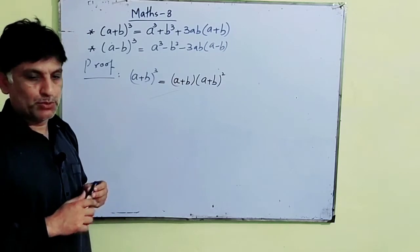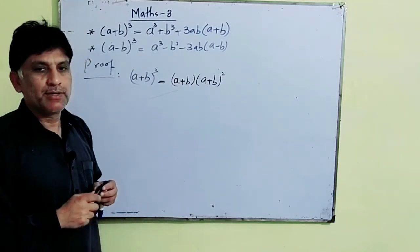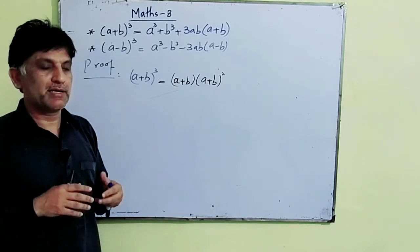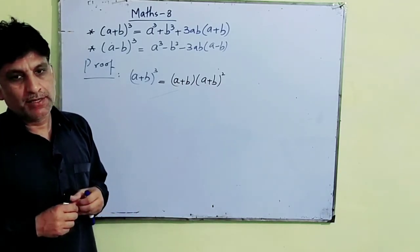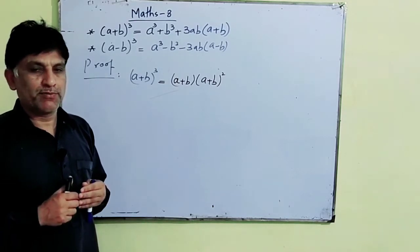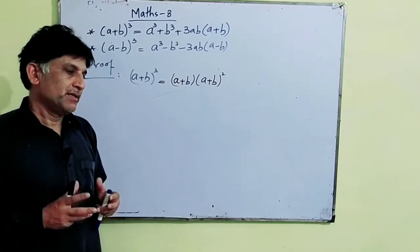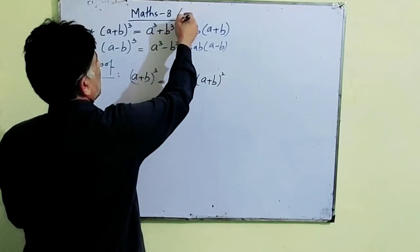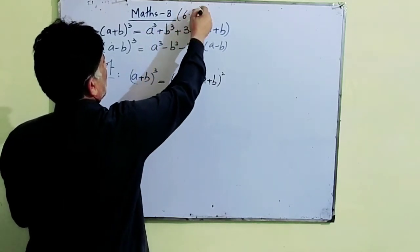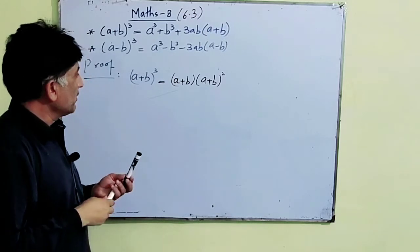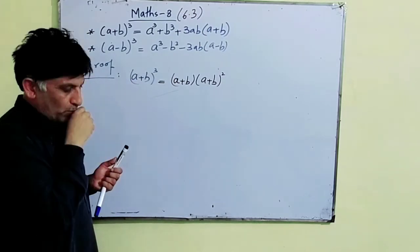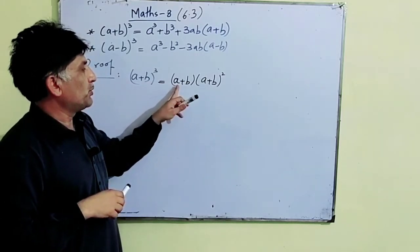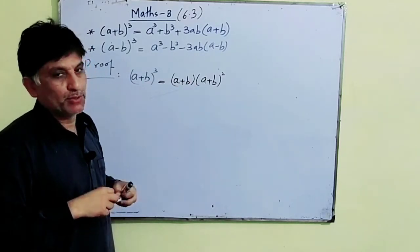First we will prove both these formulae and then we will apply them. While applying, we will take some problems ourselves and solve general problems, then you will do exercise 6.3. First, (a + b)³ = (a + b) × (a + b)².